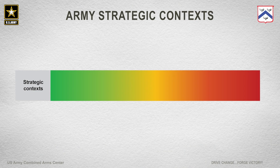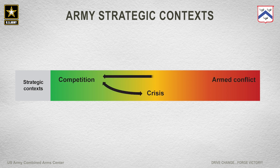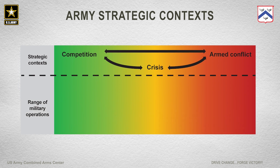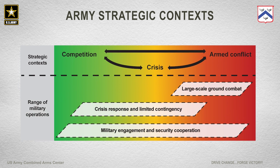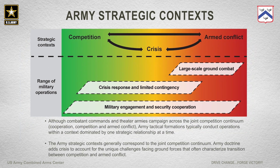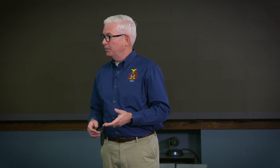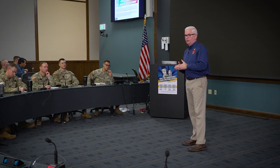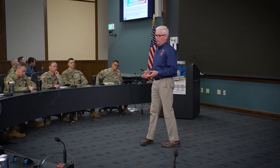Competition, crisis, and armed conflict form the range of military operations. Some operations extend from competition through armed conflict, such as military engagement and security cooperation. Others may start at one end and stop short of conflict, like crisis response and limited contingency operations. Large-scale ground combat is firmly at the conflict end, while irregular warfare extends further left. The big idea is not to get wrapped around the axle on context — echelons below theater army are typically focused on one context at a time. If you're a brigade in a conflict, you're focused on defending ground or attacking the enemy, not security cooperation.